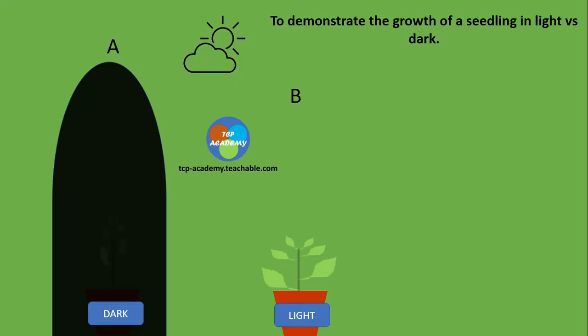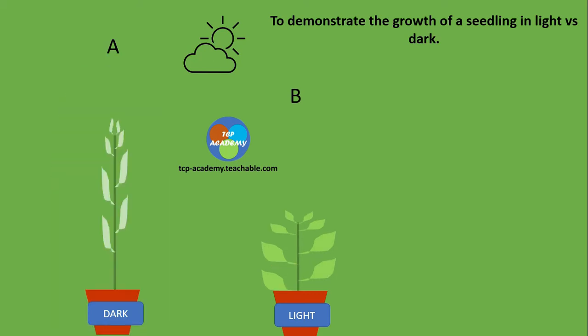Take key note of what is happening because we will need to determine the reason for that. We're seeing that plant A is much taller than plant B. However, both plants started growing at the same time.